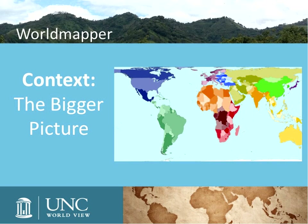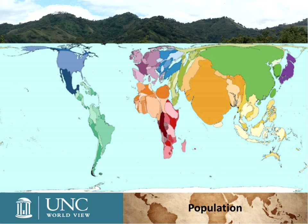Now let's move on to context — the bigger picture — and how to inspire understanding among your students. One tool you can use is maps. I'm going to show you a resource called World Mapper, which distorts images of countries based on a question or topic of interest. The first topic is population — you can see China and India are really highly distorted based on their large population, the countries literally swelling in size.